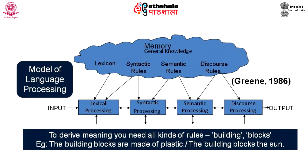This is a model of language processing where lexical processing, syntactic processing, semantic processing, and discourse processing all take place simultaneously — not in a linear order. They also take in information from our memory, represented as the brain, which stores the lexicon, syntactic rules, semantic rules, and discourse rules. This kind of language processing model is needed when building computational models, and it informs our dialogue model.